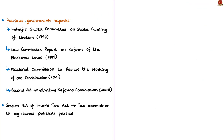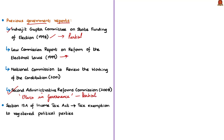This is not the first time our government has explored the possibility of state election funding. The Inderjit Gupta Committee on state funding of elections in 1998 recommended partial state funding. The Second Administrative Reforms Commission report 'Ethics in Governance' also recommended partial state funding. The Law Commission report on reform of electoral laws released in 1999 recommended full state funding. The National Commission to Review the Working of the Constitution in 2001 did not endorse state funding but suggested an appropriate regulatory framework before its implementation.